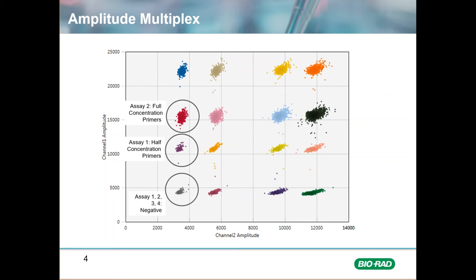Just above that is another well-separated cluster of positive droplets for assay 2. This assay was added at the full primer concentration. The fourth cluster at the top consists of double positives having targets for both assay 1 and 2.